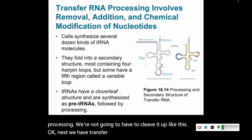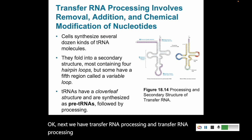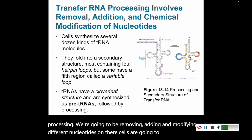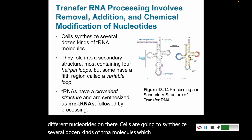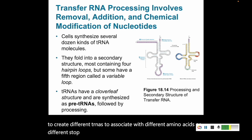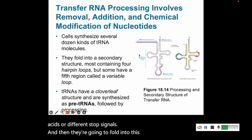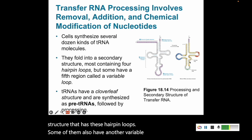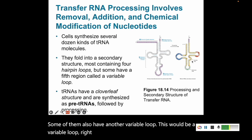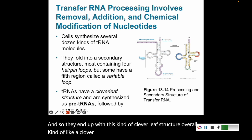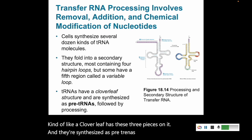Next we have transfer RNA processing. In tRNA processing, we're going to be removing, adding, and modifying different nucleotides. Cells synthesize several dozen kinds of tRNA molecules, which associate with different amino acids or different stop signals. They fold into a three-dimensional structure with hairpin loops and sometimes a variable loop, giving them an overall cloverleaf structure. They are synthesized as pre-tRNAs and then processed into this final shape.